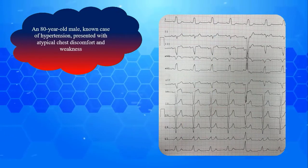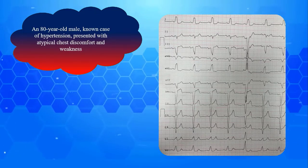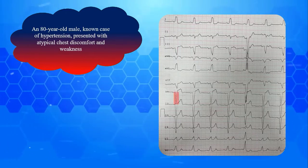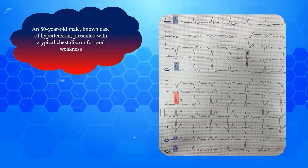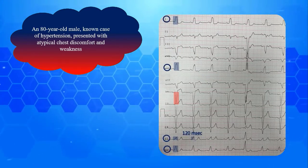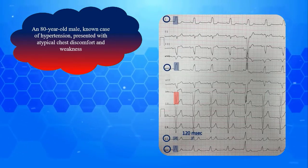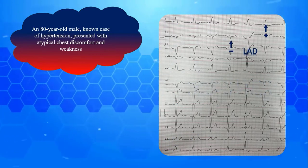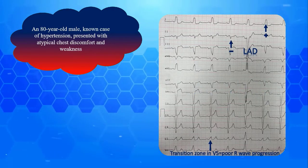Our first EKG belongs to an 80-year-old male, a known case of hypertension, presented with atypical chest discomfort and weakness. On physical examination he is tachycardic. The QRS complexes are broad with deep S wave in V1 and tall slurred R wave laterally. No septal Q wave is observed in lateral leads. R peak time in lateral leads is obviously prolonged at about 120 milliseconds. Therefore this is a typical LBBB. Other associated findings are left axis deviation, poor R wave progression, and occasional secondary STT wave changes.